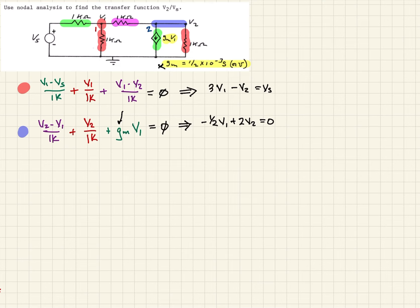Now we have two expressions in terms of V1, V2, and Vs. We should be able to use matrices analysis to solve for this. We can define V2 then. We could rewrite this as a matrix: 3 minus 1, and minus 1 half and 2. That's going to be times V1, V2, and that's going to be equal to Vs and zero.